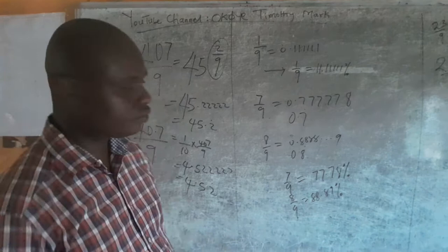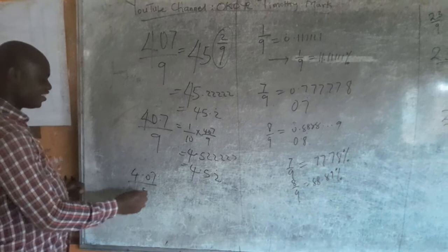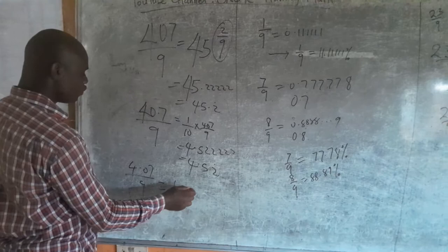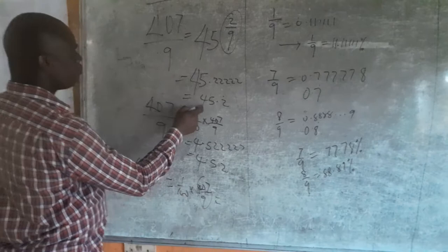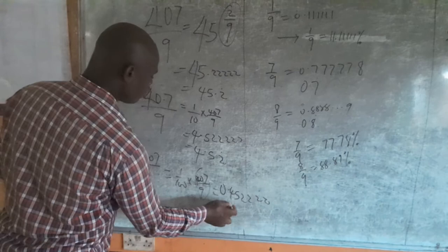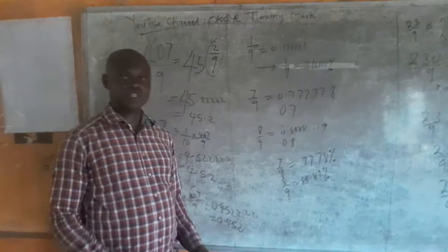If you move down to 4.07/9, which is 1/100 times 407/9, that's dividing this answer by 100, giving 0.452222, which is 0.4522 with a dot on the 2, and so on and so forth.